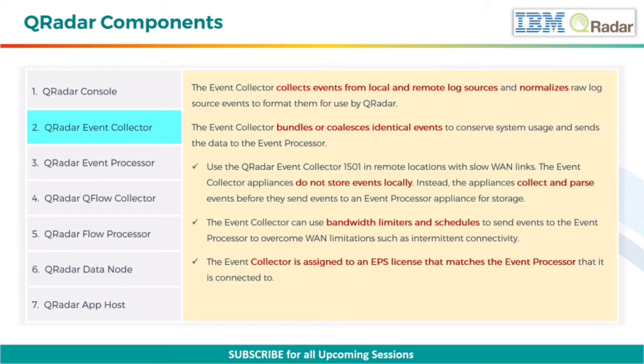Next, the Event Collector collects events from local and remote log sources and normalizes raw log source events to format them for use by QRadar. The Event Collector bundles identical events to conserve system usage and sends the data to the event processor. The QRadar Event Collector can be installed at remote locations with slow WAN links.